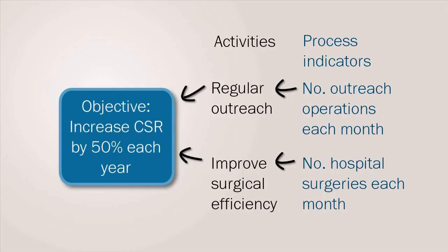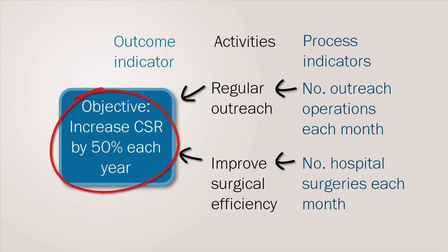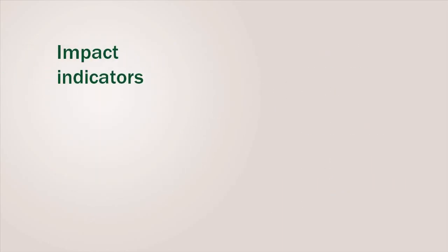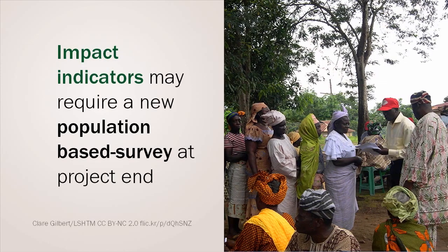To see if activities actually make a difference, managers review the data and calculate an outcome indicator. In our example, cataract surgical rate at the end of each year, to see if it has increased by the required 50%. Impact indicators are more complicated and may require a new population-based survey to be carried out at the end of the implementation phase of the project.